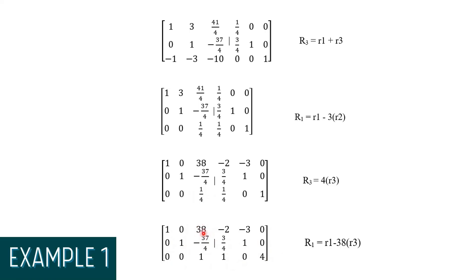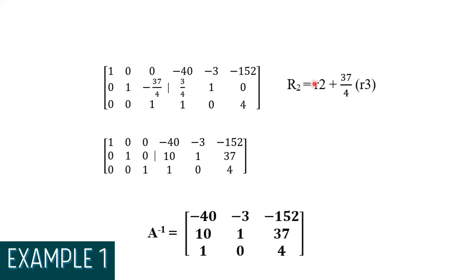Next, we make the remaining two rows' entries 0 by subtracting the current row 1 by 38 times the current row 3, and by adding row 2 with 37/4 times the current row 3. We will now get our identity matrix. After getting our identity matrix, we also get the inverse of A, which is: [negative 4, negative 3, negative 152; 10, 1, 37; 1, 0, 4].